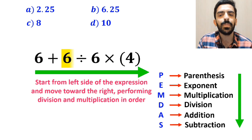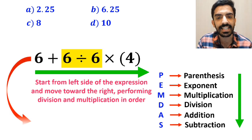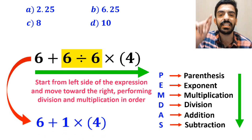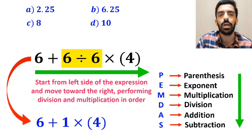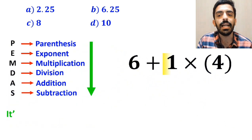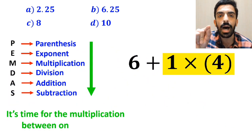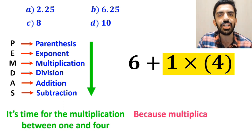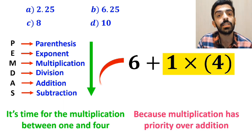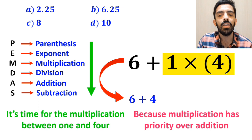So, first we perform the division between 6 and 6, which simplifies this expression to 6 plus 1 times 4. In the next step, it's time for the multiplication between 1 and 4, because multiplication has priority over addition. So, instead of this expression, we can write 6 plus 4, which ultimately gives us the answer 10.